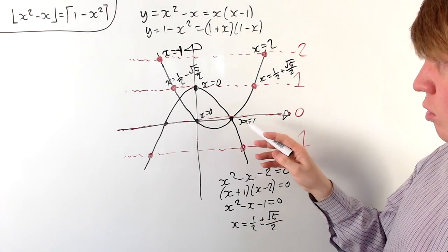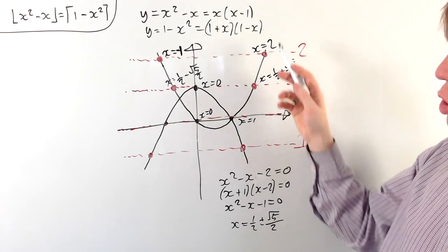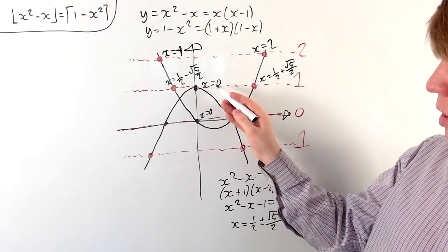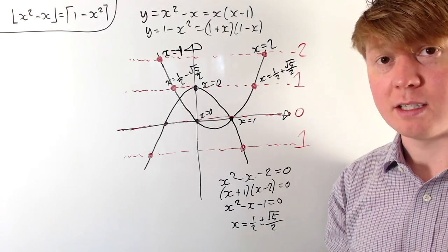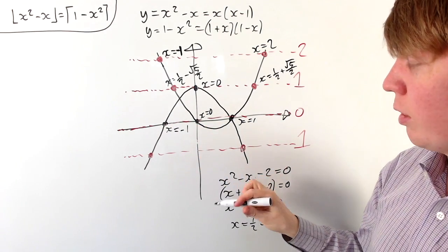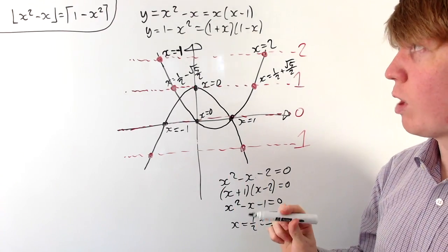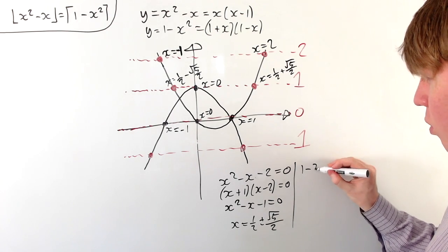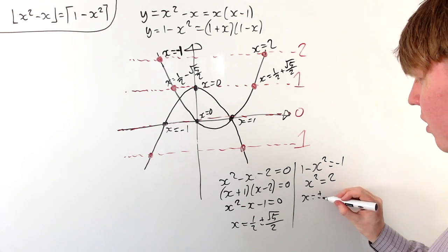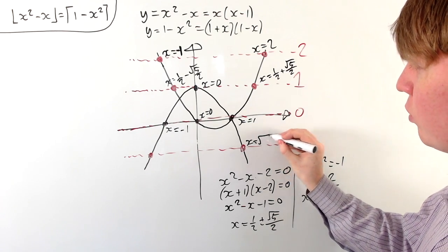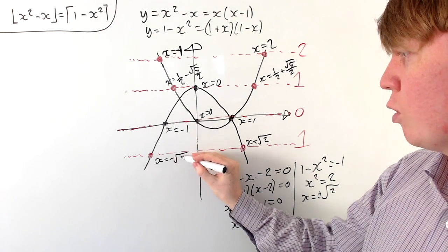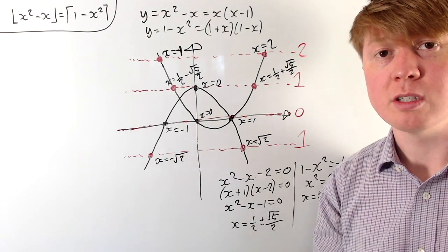Now for y equals 1 minus x squared: it equals 1 only when x is 0, and equals 0 at x equals plus or minus 1. The key calculation is where 1 minus x squared equals minus 1, which rearranges to x squared equals 2, giving x equals plus or minus root 2. So x equals positive root 2 and x equals negative root 2 are where 1 minus x squared equals minus 1.